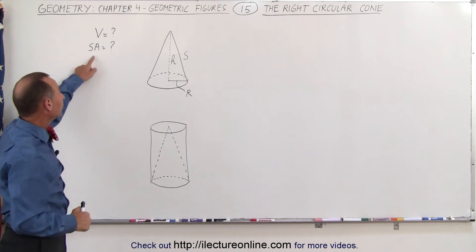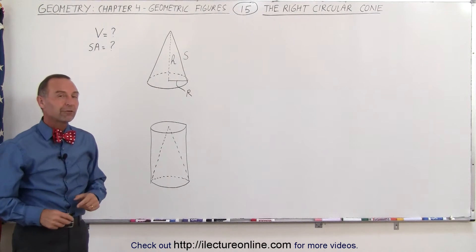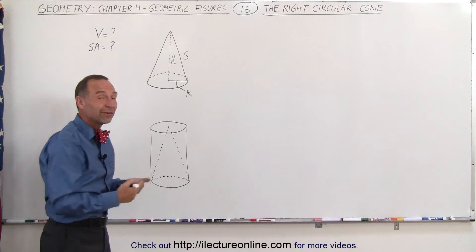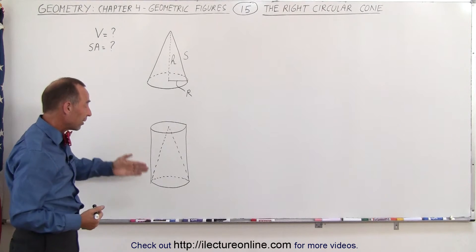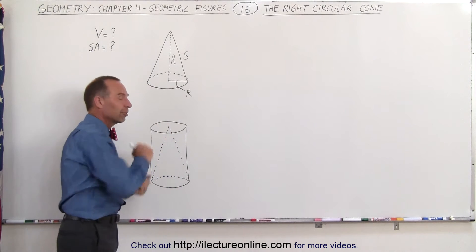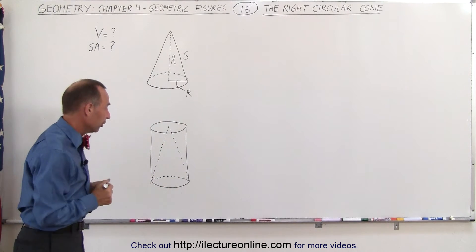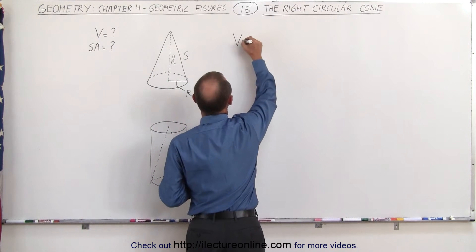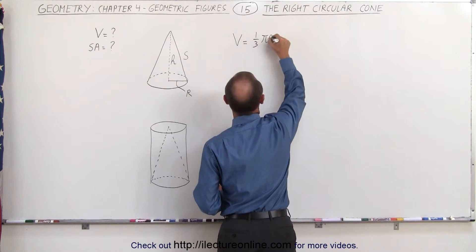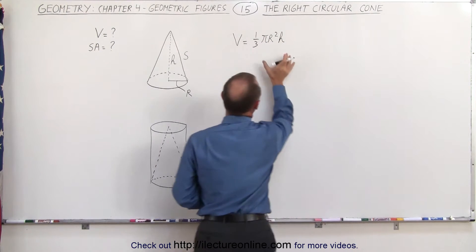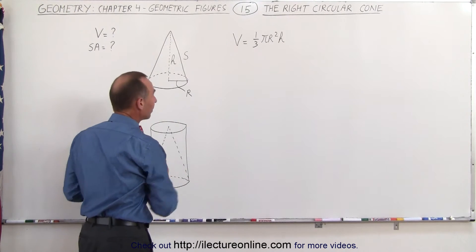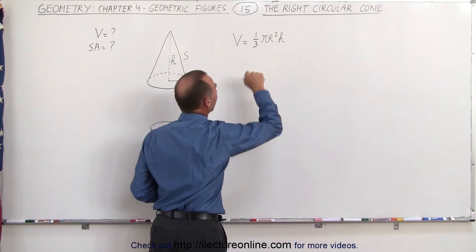We're trying to find the volume and the surface area of this cone. For the volume, it turns out it's actually a fraction of the volume of a cylinder that it fits into. The volume of the cylinder would be the area of the base times the height, and then all we need to do is put a fraction in front of that. It turns out that fraction equals one-third. So the volume equals one-third times pi R squared times the height of the cone.